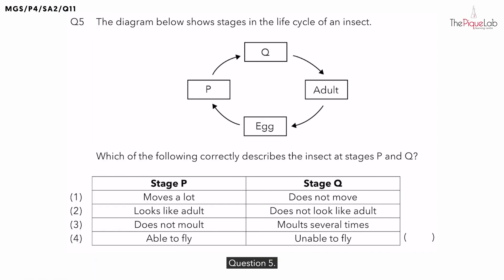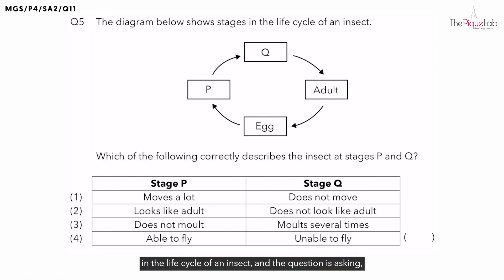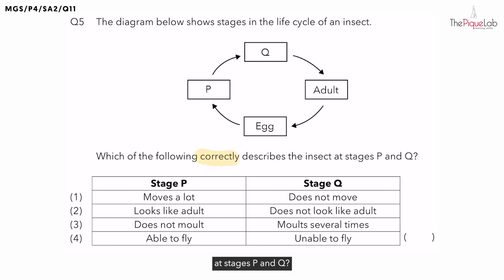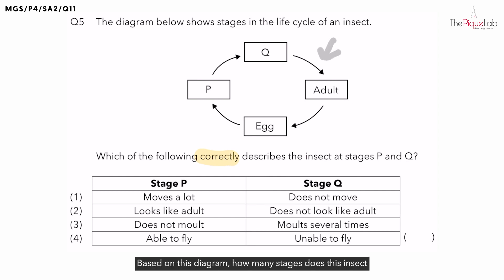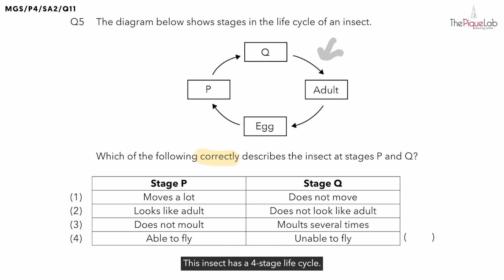Question 5. The diagram below shows the stages in the life cycle of an insect, and the question is asking which one of the following correctly describes the insect at stages P and Q. Based on this diagram, how many stages does this insect have in its life cycle? This insect has a 4-stage life cycle.